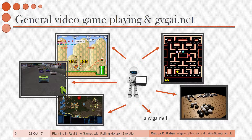The framework covers over 160 games currently, and also in different contexts, including planning, learning, and procedural content generation — level and rule generation. The agents receive a number of games for training and are tested on new unknown games. These range from shooters to puzzles to adventure games, all in 2D so far.